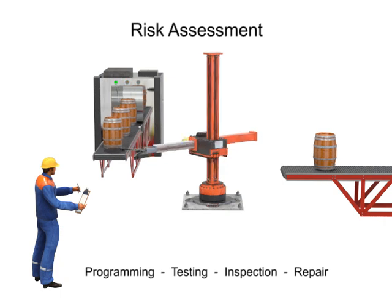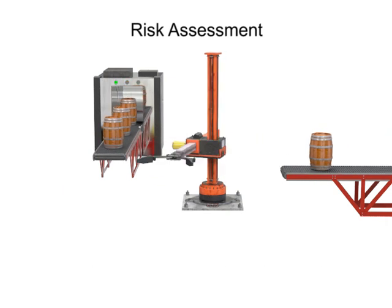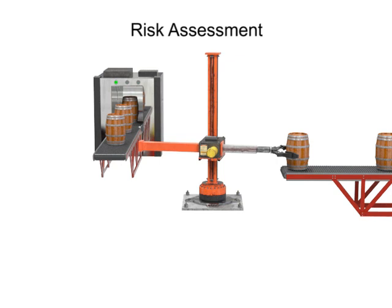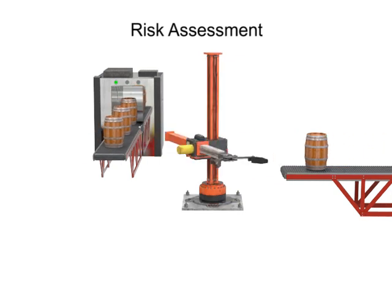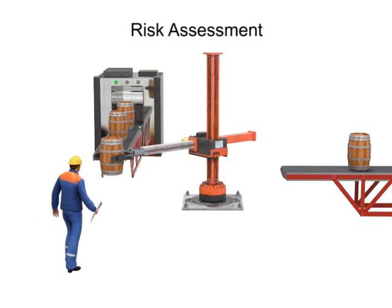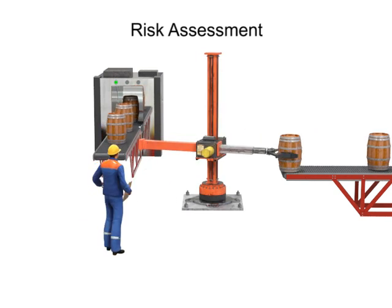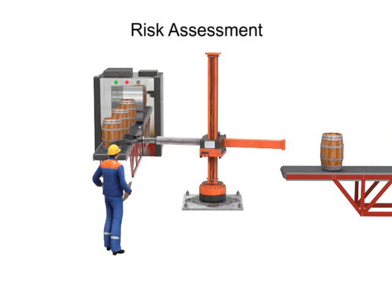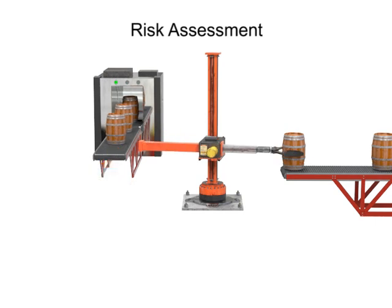By system design, robots rarely need human interaction during normal use and operation. But when programming, testing, inspection, or repair is required, humans are more likely to be in the robot's work area or work envelope. Unauthorized access to the robot's work envelope can be hazardous to personnel.